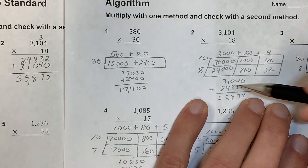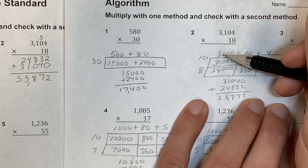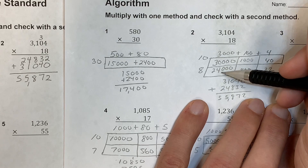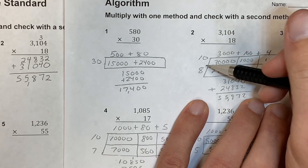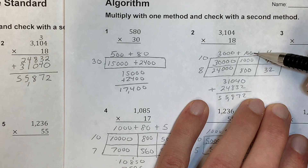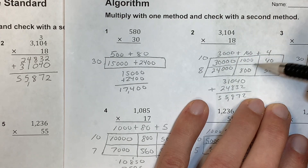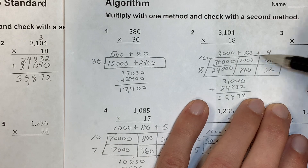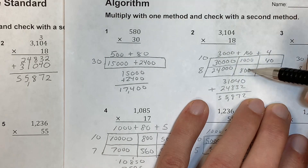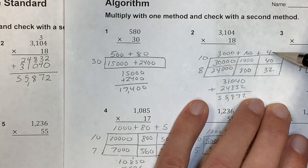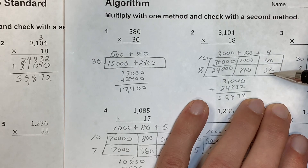Now for the 8: 3,000 times 8 is 24,000 — do 8 times 3 is 24 and add three zeros. 100 times 8 is 800 — do 1 times 8 is 8 and add two zeros. And 4 times 8 is 32.